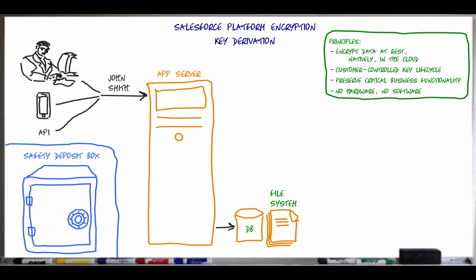These master HSMs are stored in geographically isolated safety deposit boxes around the world. The security officer then, using the secure laptop with HSM, generates a number of items that are used throughout the process, including a release-specific master secret, a master salt, a tenant wrapping key, and some other keys used throughout the process.